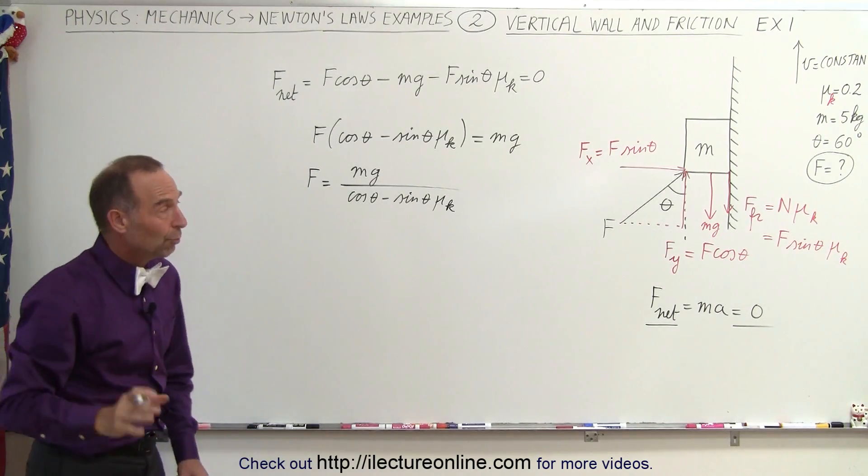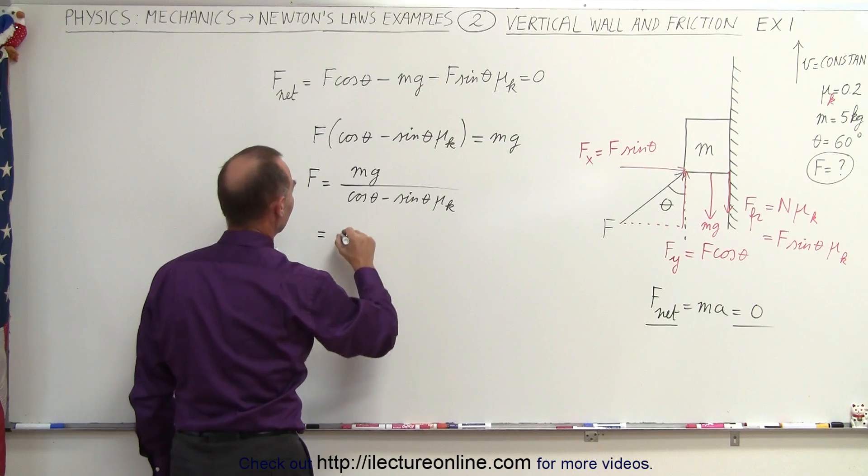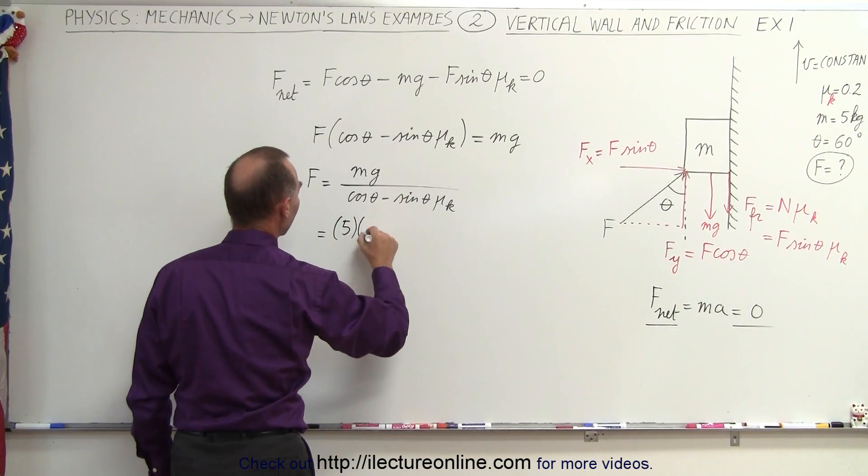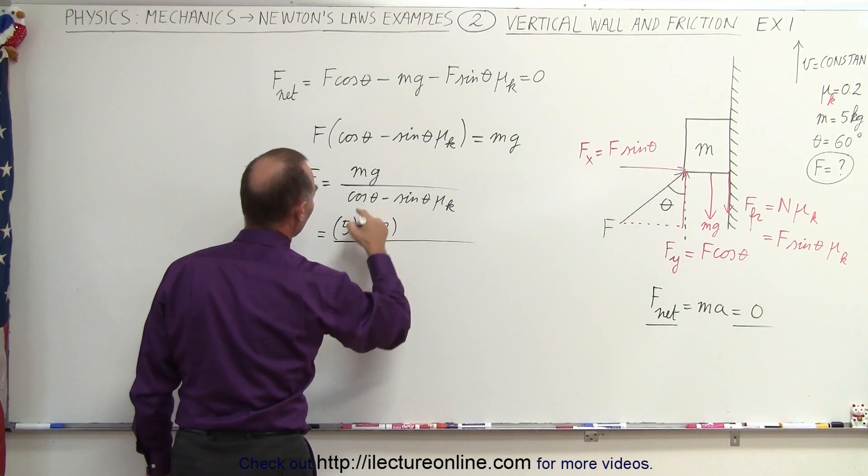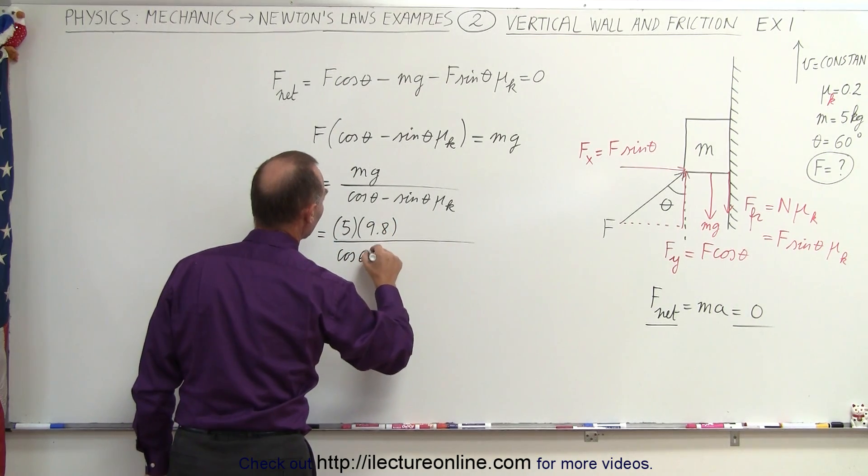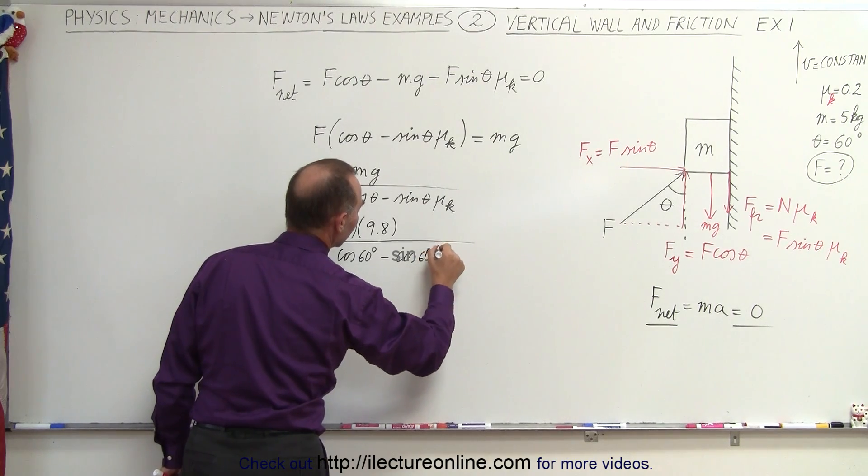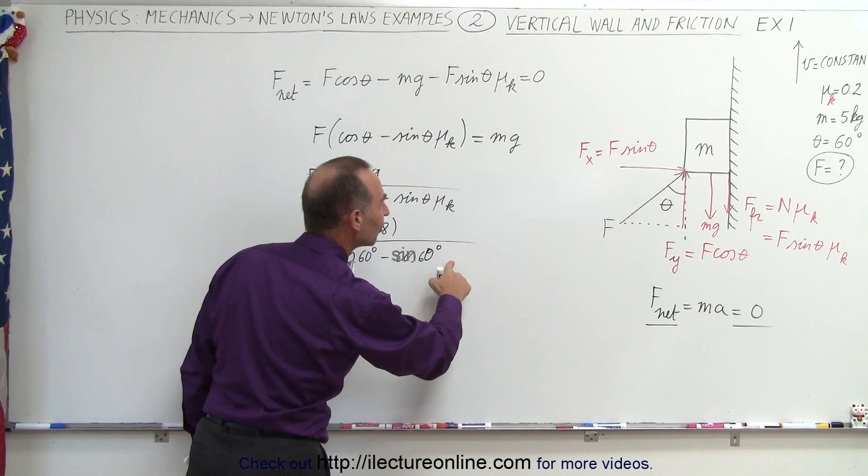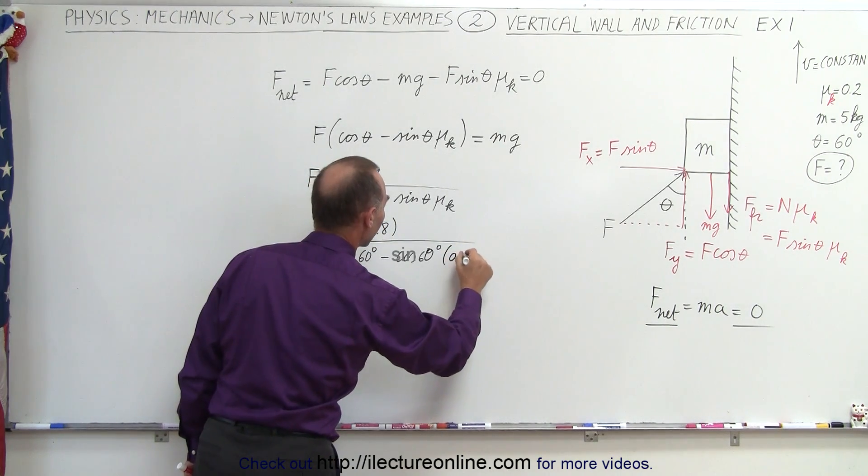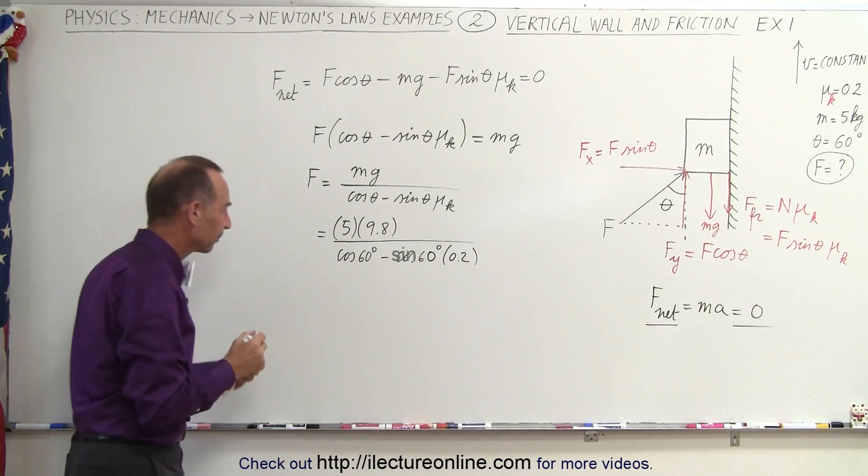And now, if you want to find the numerical value, let's plug in the numbers. So that's equal to the mass, 5 kilograms times g, 9.8 meters per second squared, divided by the cosine of 60 degrees, minus the sine of 60 degrees times mu sub k, which is 0.2. Let's get rid of this and make it a nicer looking zero.